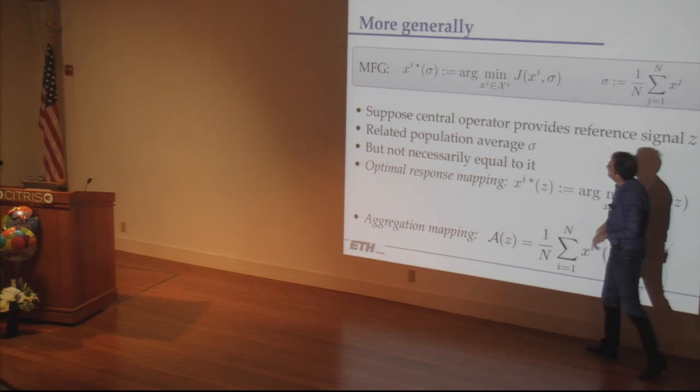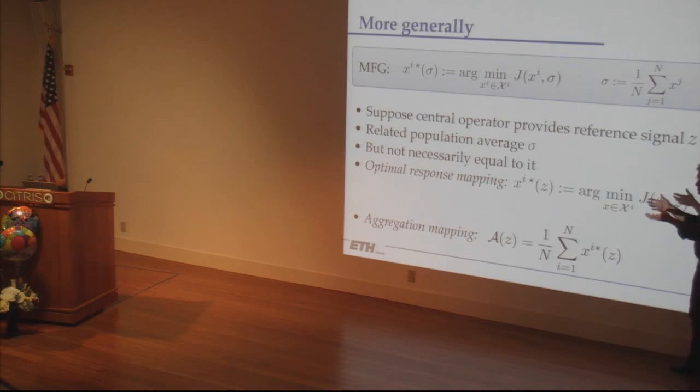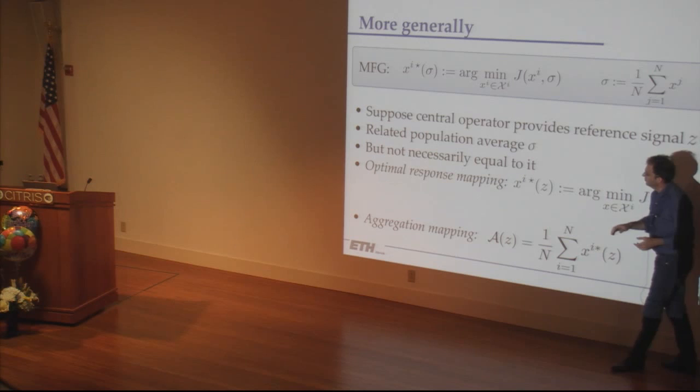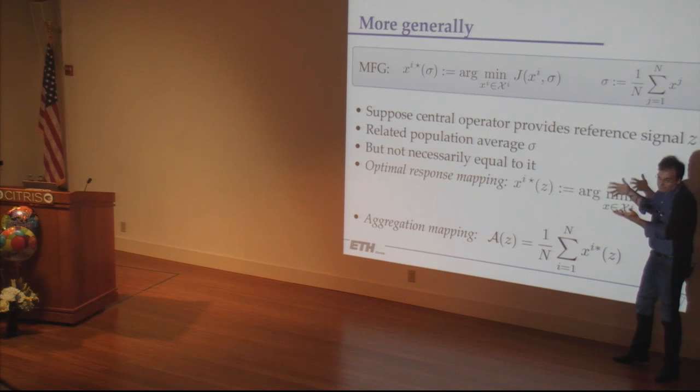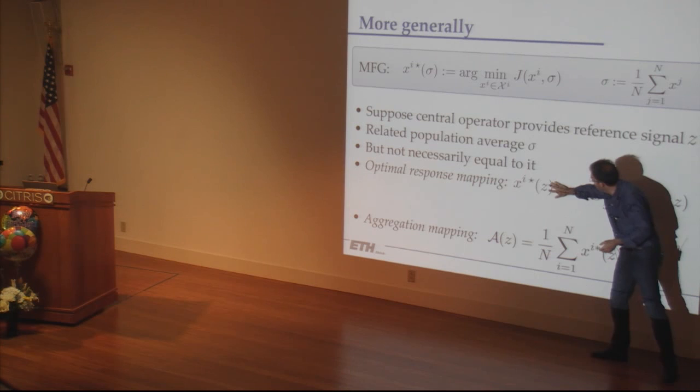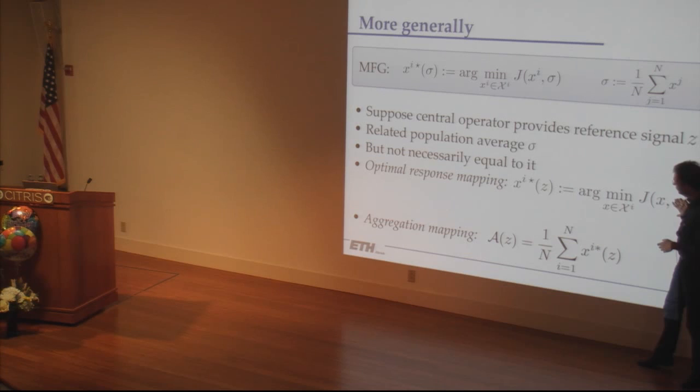The centralized operator takes the solutions of the individual agents, computes the aggregate, and then tells them something about the aggregate to help them make the next decision. You don't have to tell them exactly what the aggregate is — you can tell them something related to the aggregate to help them make the right decision. The question is: if you tell them this information, what will they do? They compute their optimal solution, you aggregate, and get a new aggregate solution.